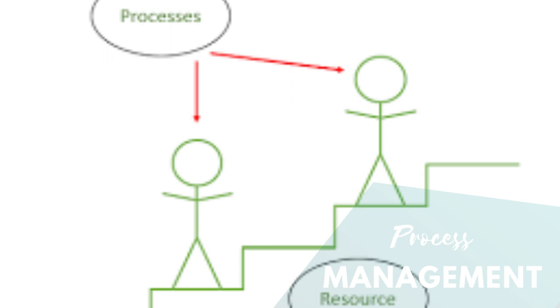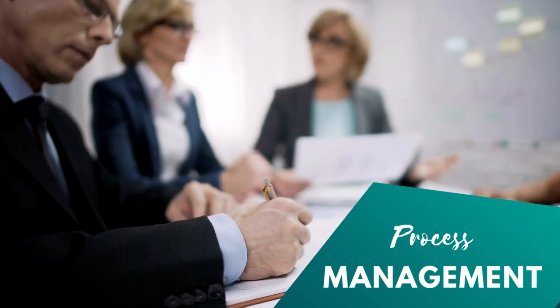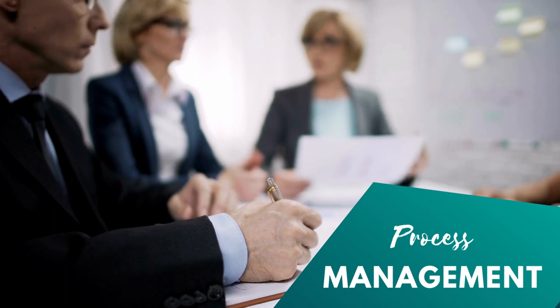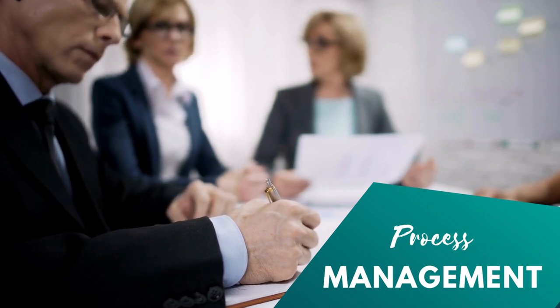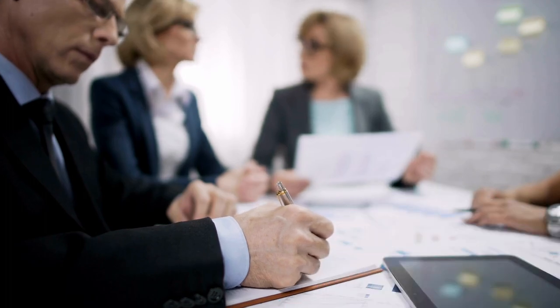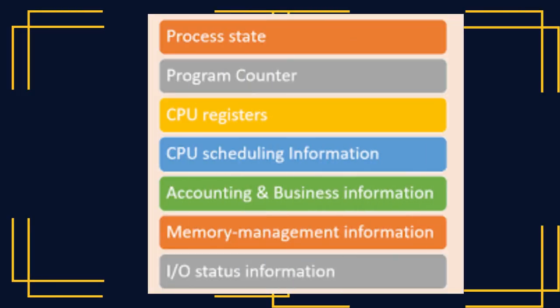Process Control Block. The Process Control Block, or PCB, is like a file that the operating system keeps for each process. It contains important information about the process, allowing the operating system to manage and control processes effectively. Inside the PCB, you'll find details such as the process ID, a unique identifier, the program counter which keeps track of the next instruction to be executed, CPU registers, memory management info, open file descriptors, process state such as running, ready, or blocked, process priority, and CPU scheduling information. The PCB helps the operating system keep track of processes and switch between them when needed.